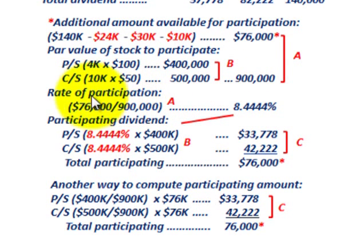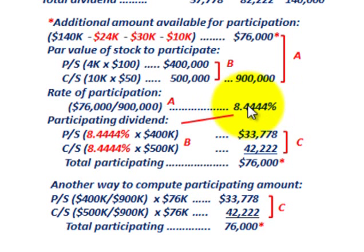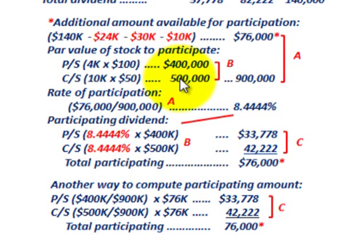The rate of participation is calculated by taking the amount we have to allocate — $76,000 — and dividing it by the total par amount of $900,000. That gives us a rate of participation of 8.444%. So we take that percentage and divide the remaining $76,000 between the two classes of stock based on their par values.